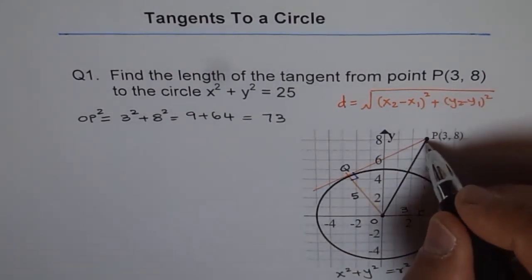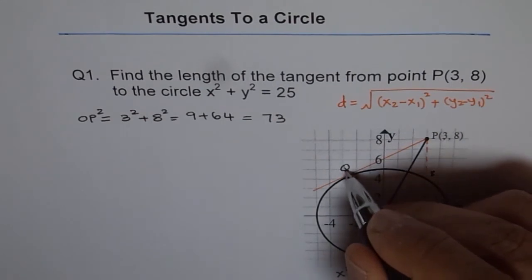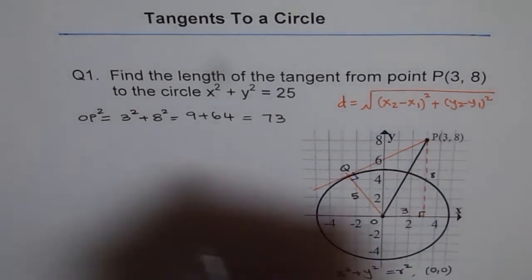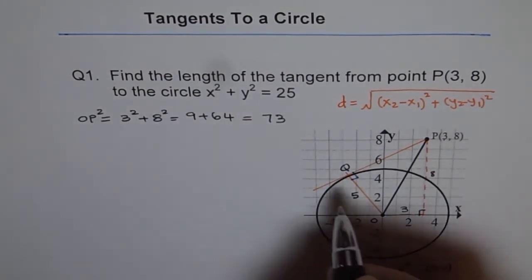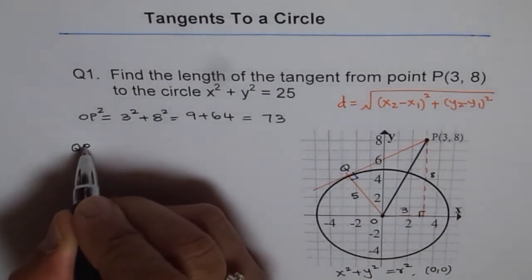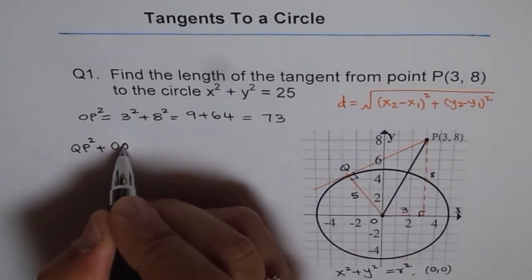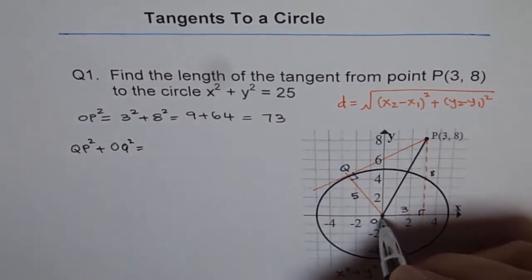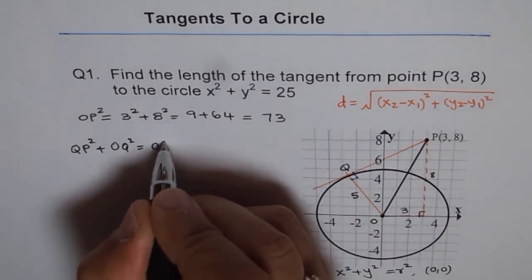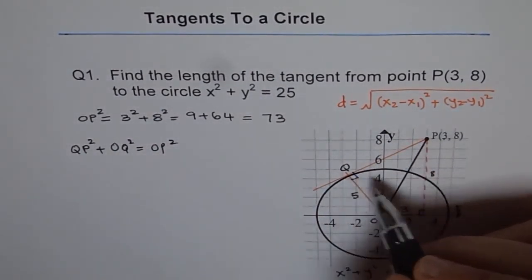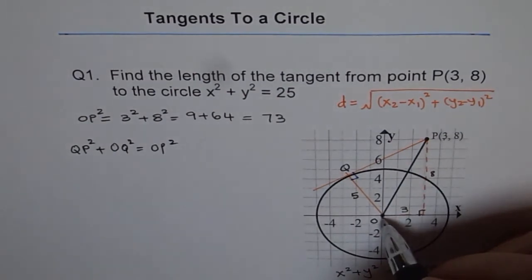Now, we know 73 is OP square, and we know QO, so we can find QP. So QP could be found as QP square plus OQ square should be equals to OP square. Because in this particular triangle, that is the right angle, and OP is the hypotenuse.